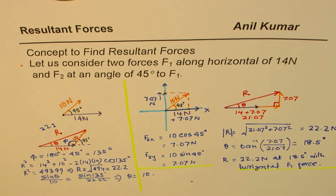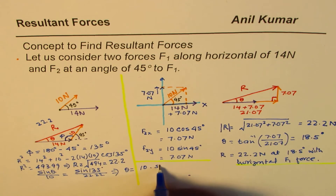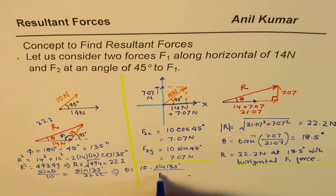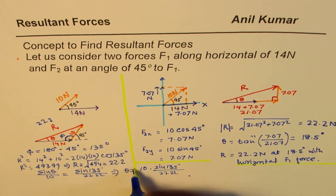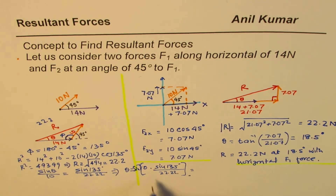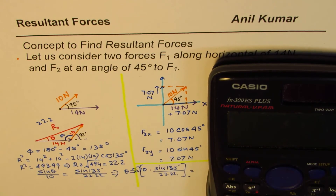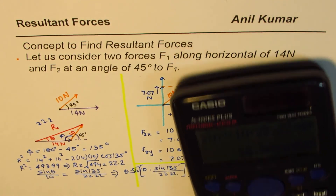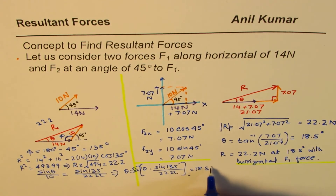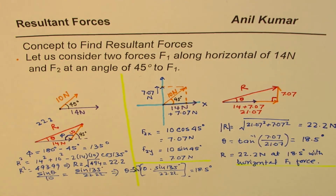Calculating: sine inverse of 10 times sine 135 degrees divided by 22.22 gives us the same angle of 18.55 degrees. So the resultant is 18.5 degrees. Either method gives the same answer, confirming both approaches work correctly for finding resultant forces.